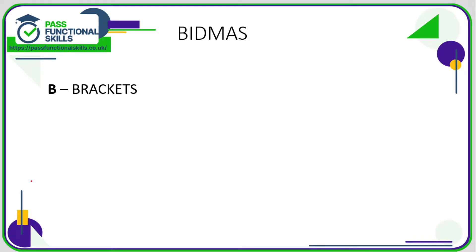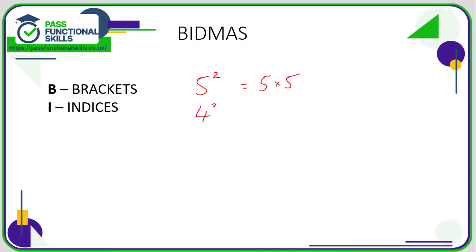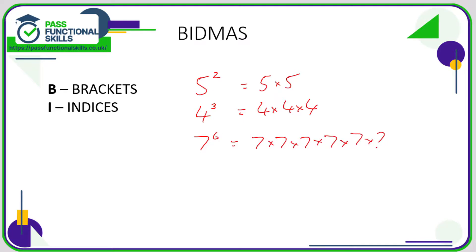After brackets, you need to deal with indices. Indices are the little numbers you see to the right of digits. For example, five with a little two means five to the power of two, or five squared, which means five times five. Or four to the power of three, four cubed, is four times four times four. Or seven to the power of six would be seven times seven times seven times seven times seven times seven.